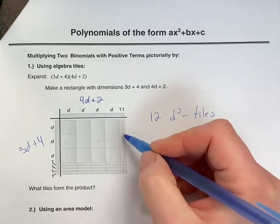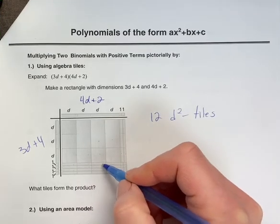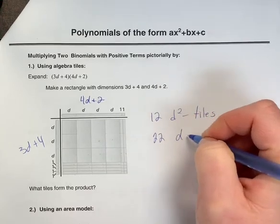With the long skinny sticks here, we have 1, 2, 3, 4, 5, 6, 7, 8, 9, 10, 11, 12, 13, 14, 15, 16, 17, 18, 19, 20, 21, 22. So we have 22d tiles.